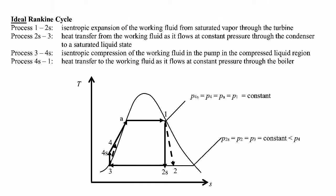Schematically, in an ideal Rankine cycle, process 1 to 2s is the turbine. State 1 is at a higher pressure isobar, typically at a saturated vapor state for the simple Rankine cycle. In an actual turbine we drop down to a smaller pressure. In the actual process there's some irreversibility, so state 2 has a larger specific entropy than state 1. In the ideal case with 100% isentropic efficiency, the process drops straight down to state 2s — an isentropic process.